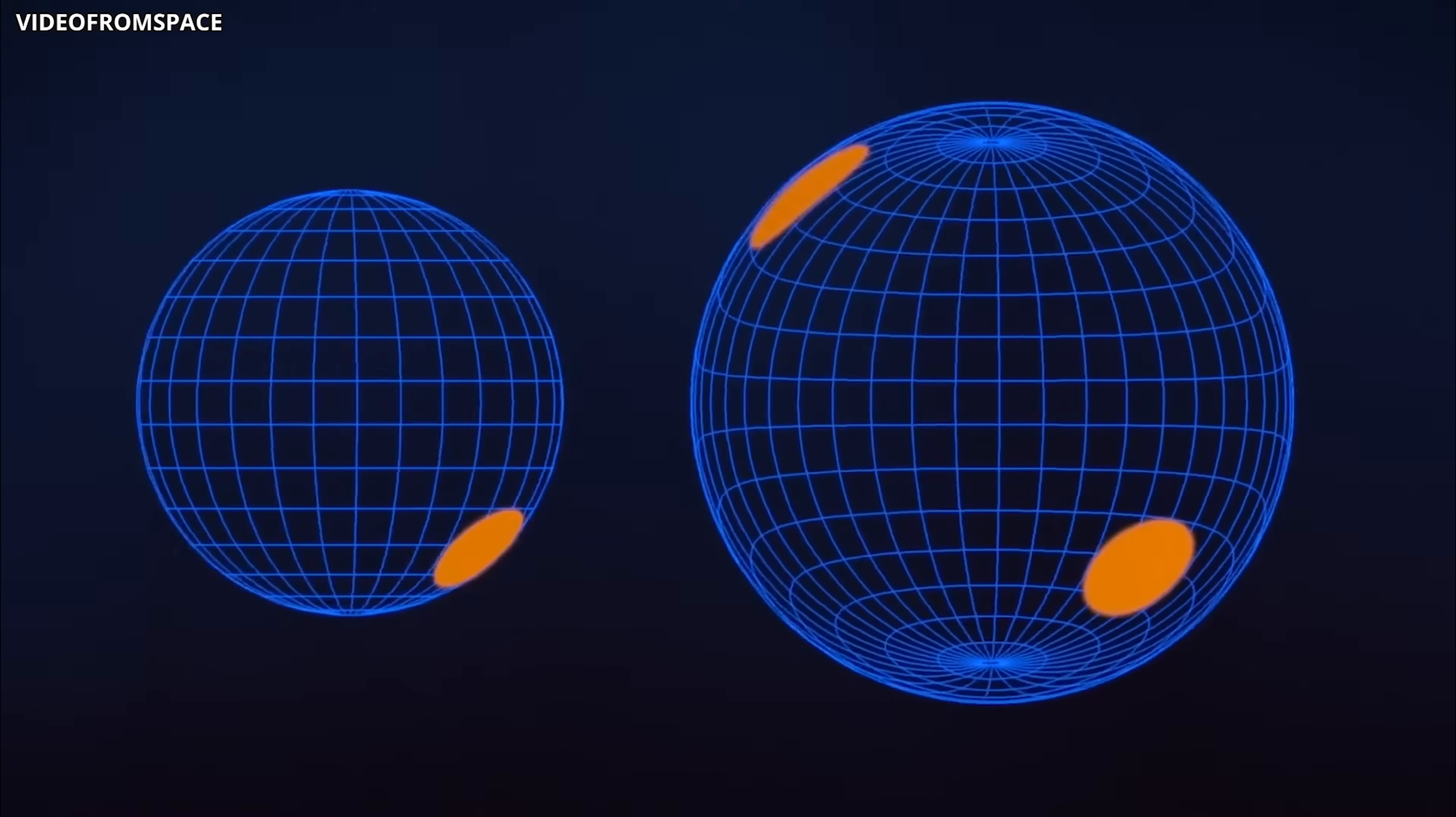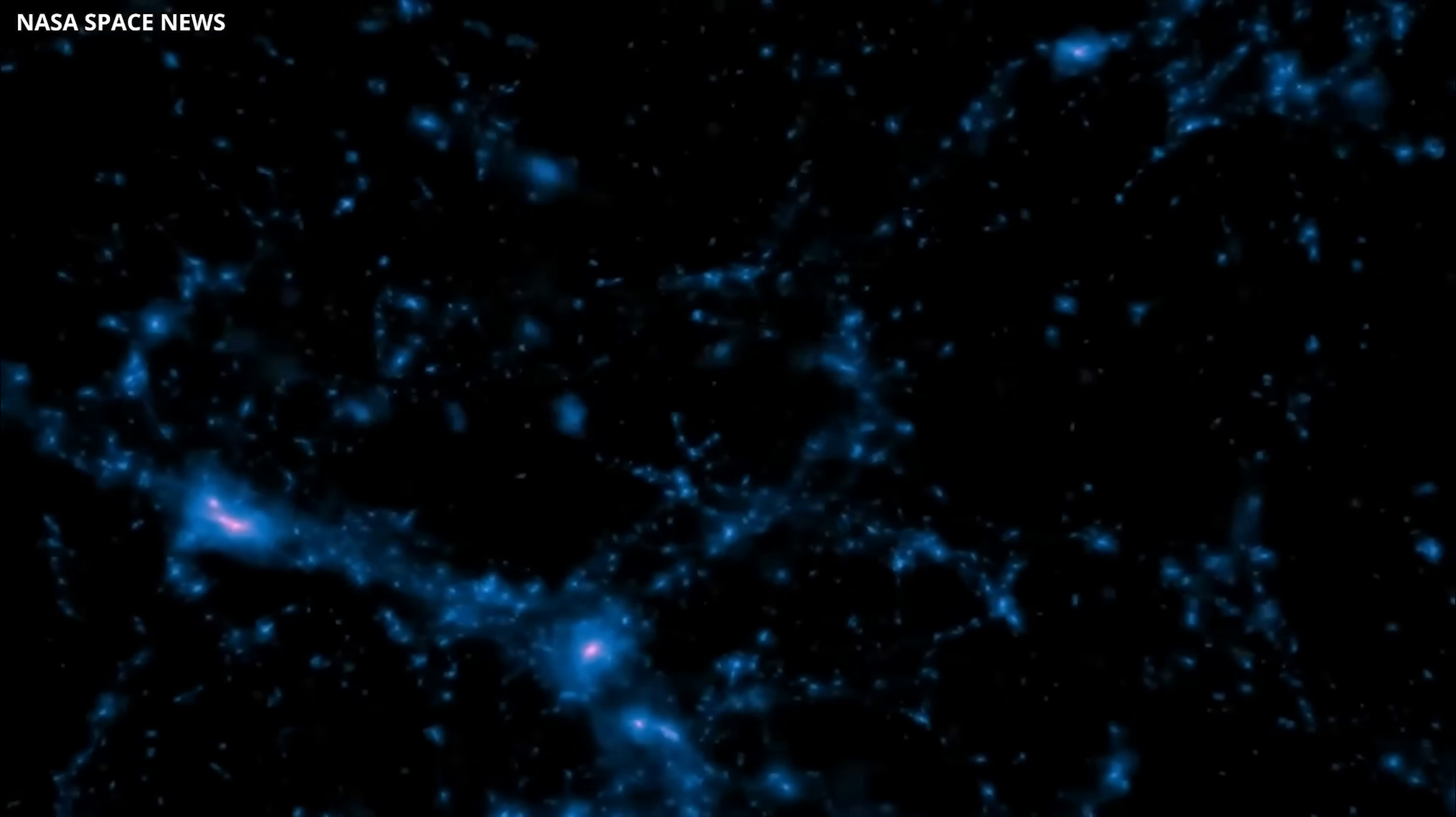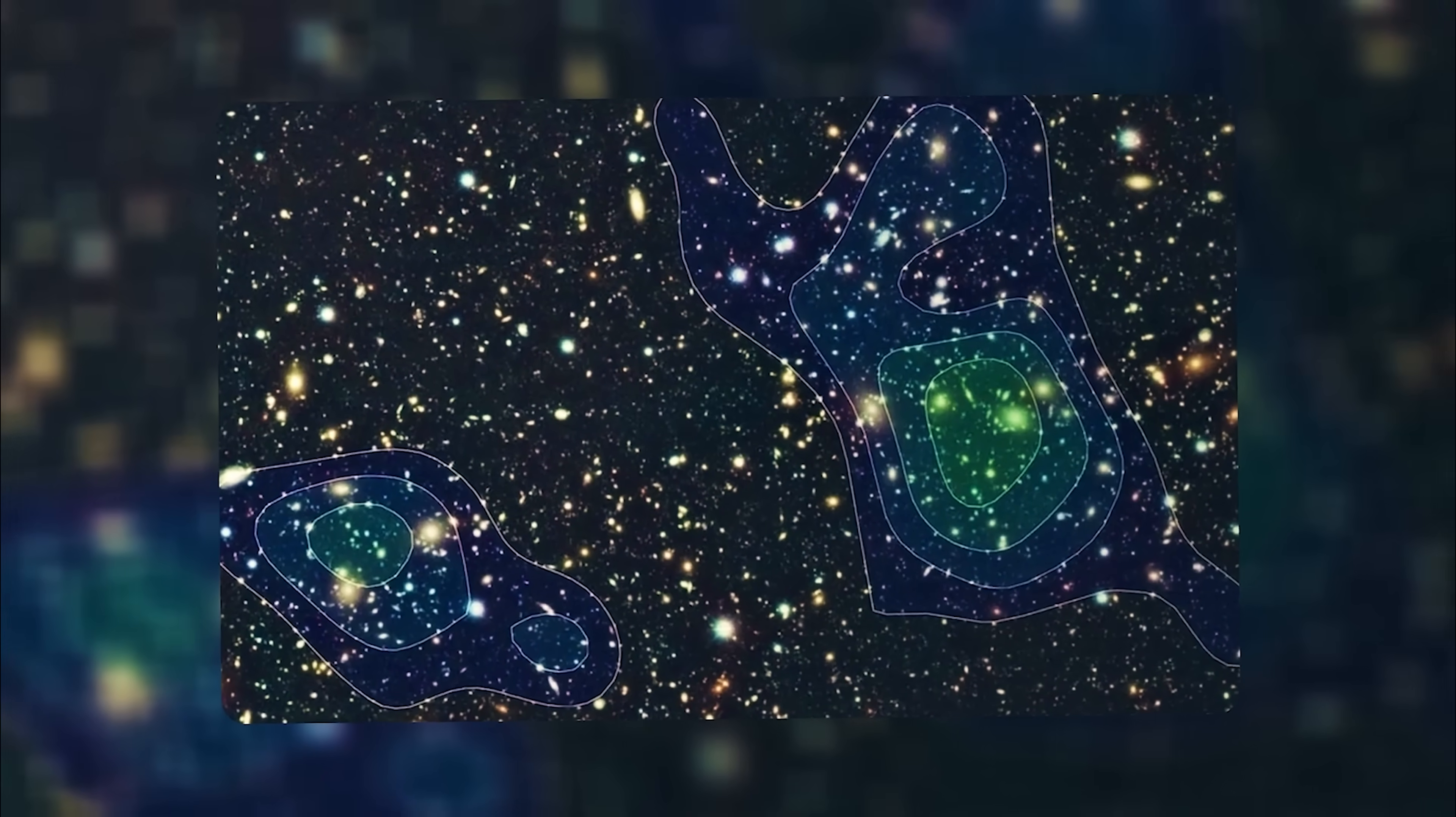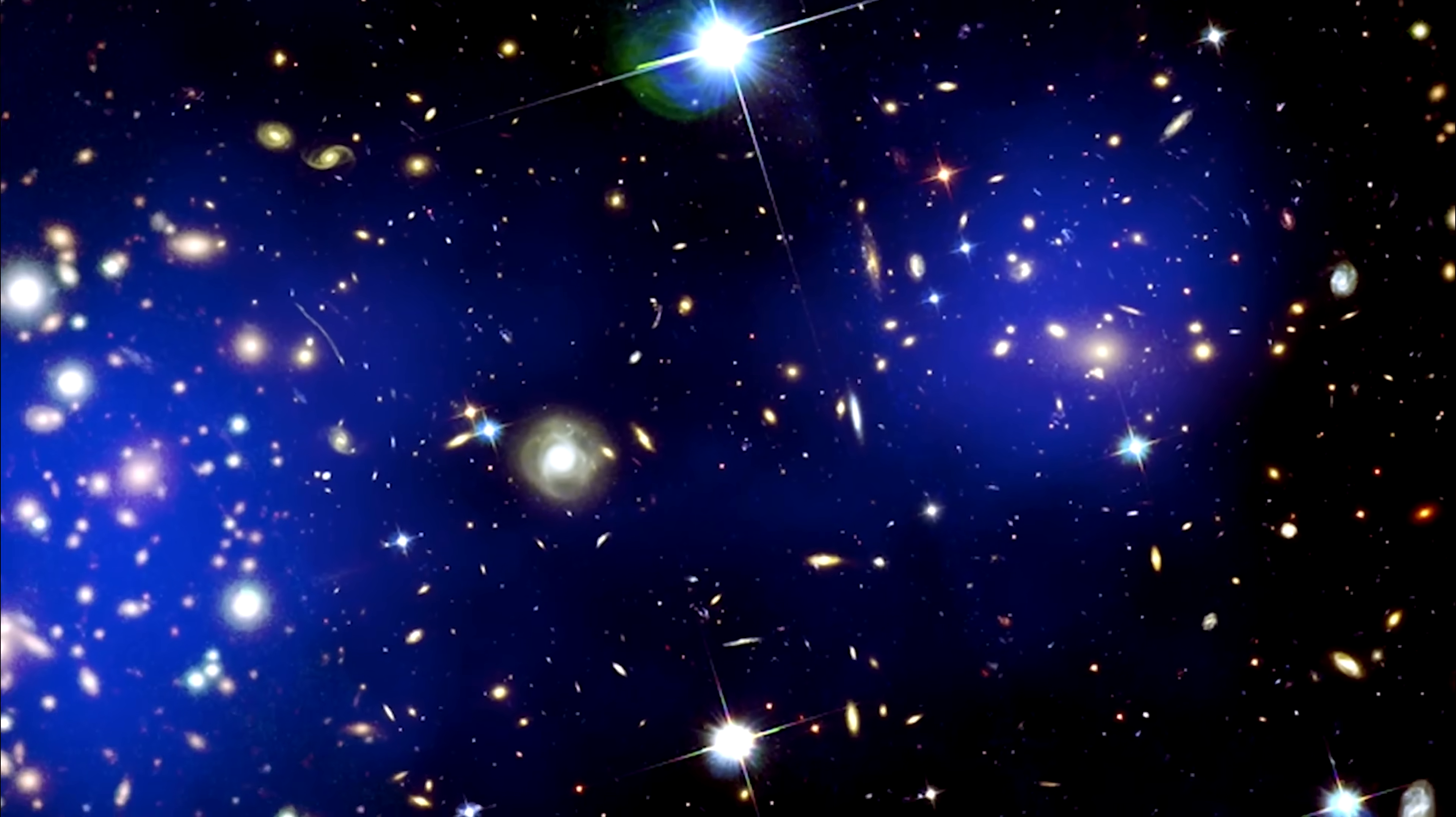By expanding the number of pulsars we monitor and sharpening the accuracy of these measurements, we could soon place far tighter limits on dark matter halos and start building an actual map of the dark structures scattered across our galaxy. Such a map wouldn't just reveal what dark matter is made of. It might also solve long-standing puzzles, like why some galaxies seem almost empty of dark matter while others are packed with it.